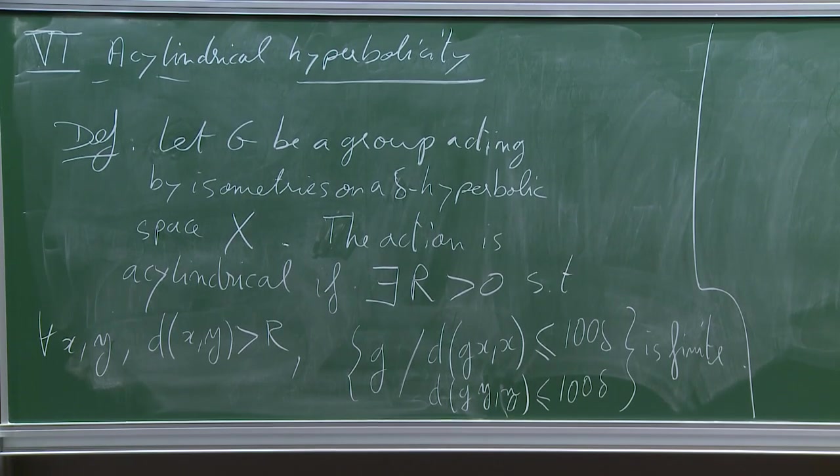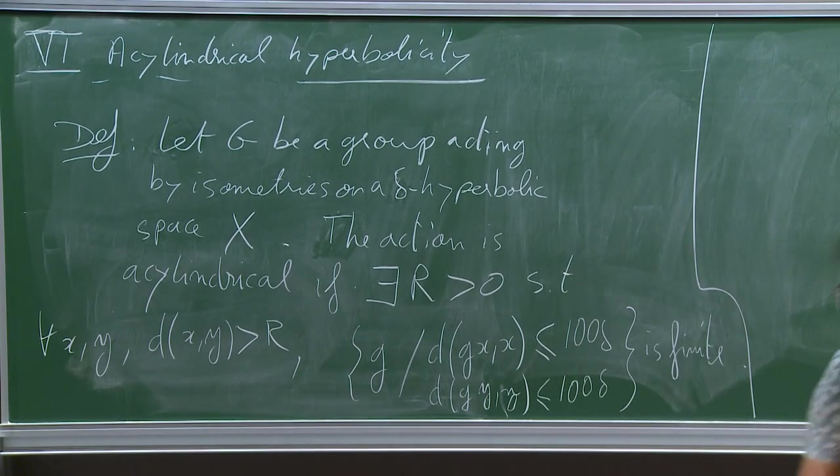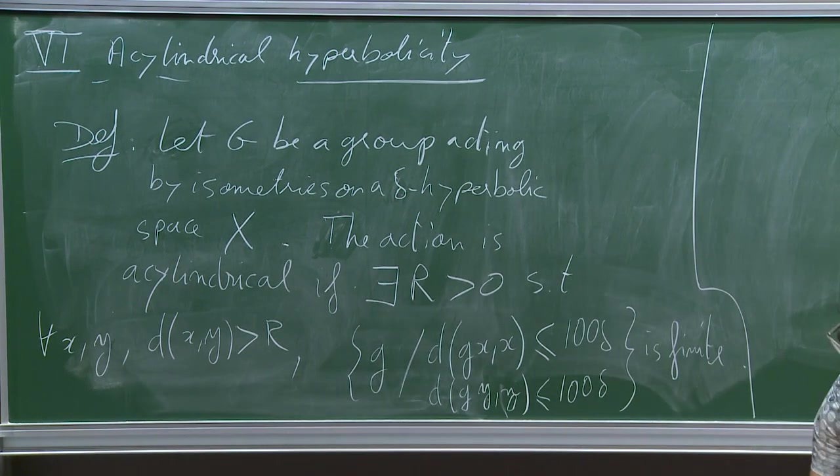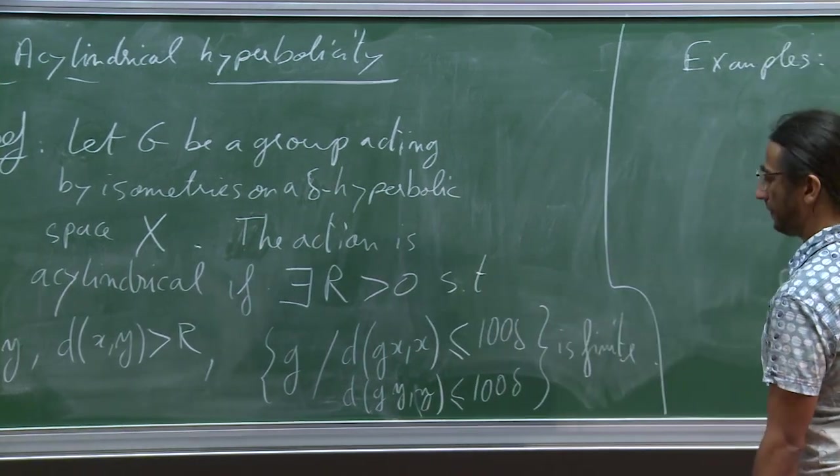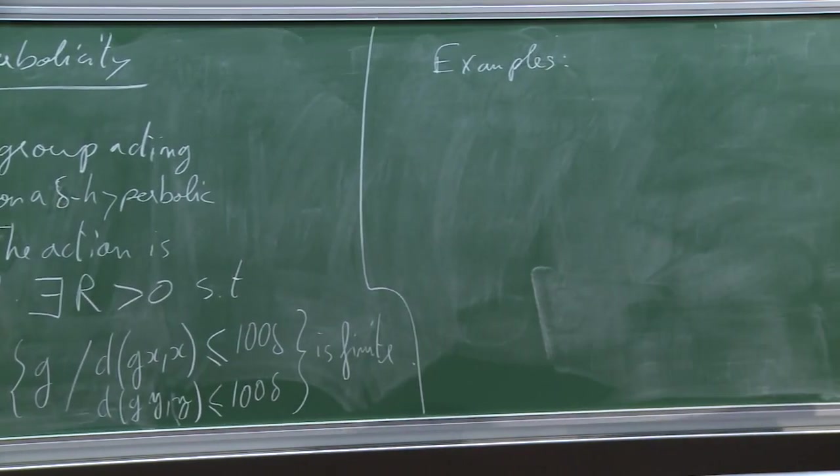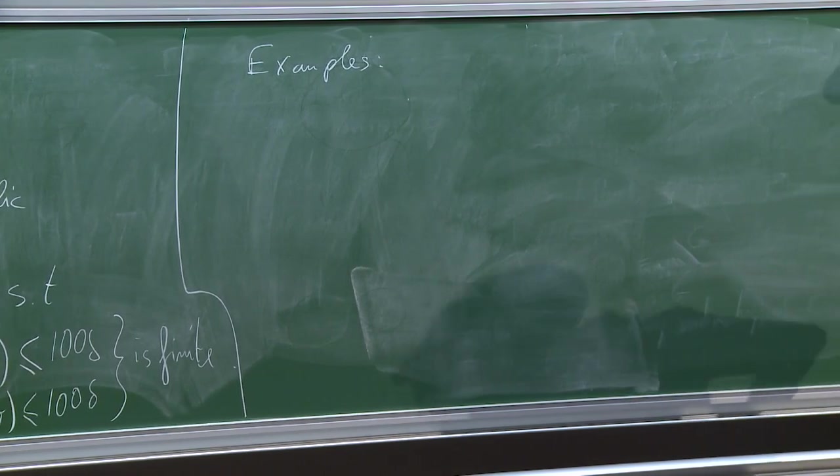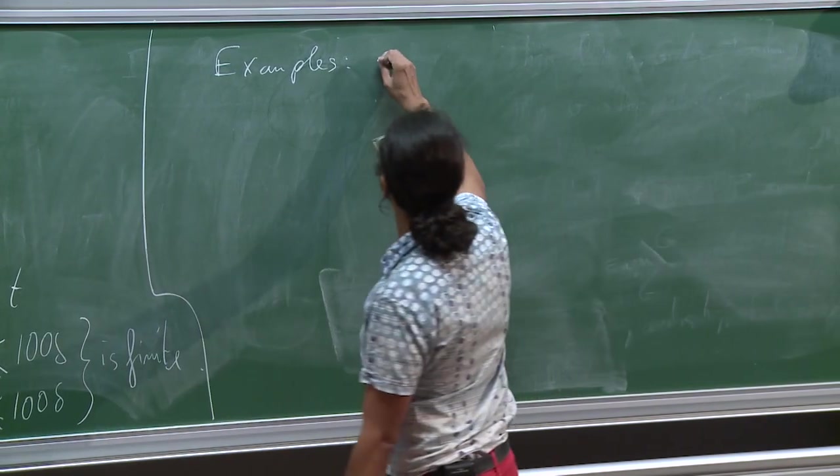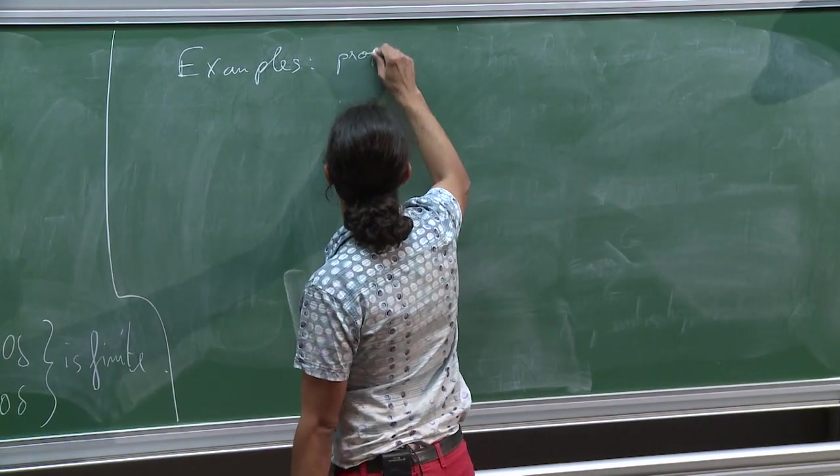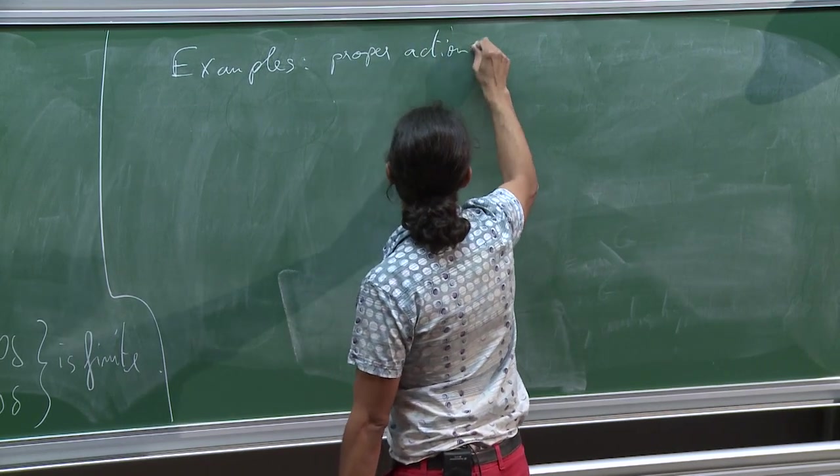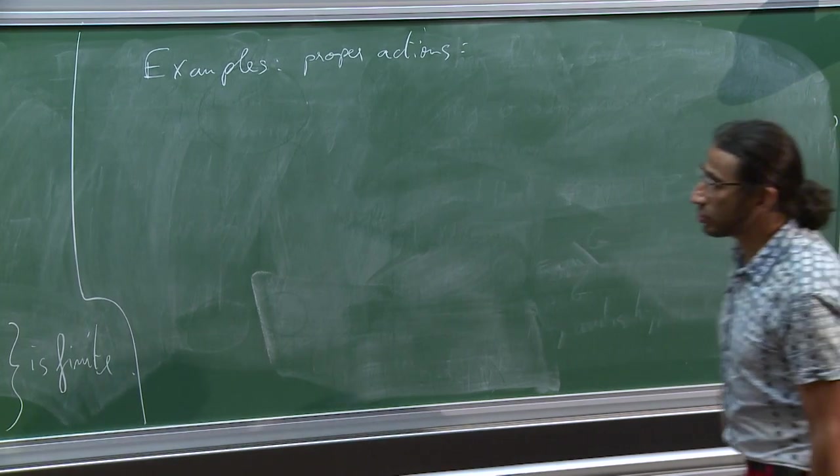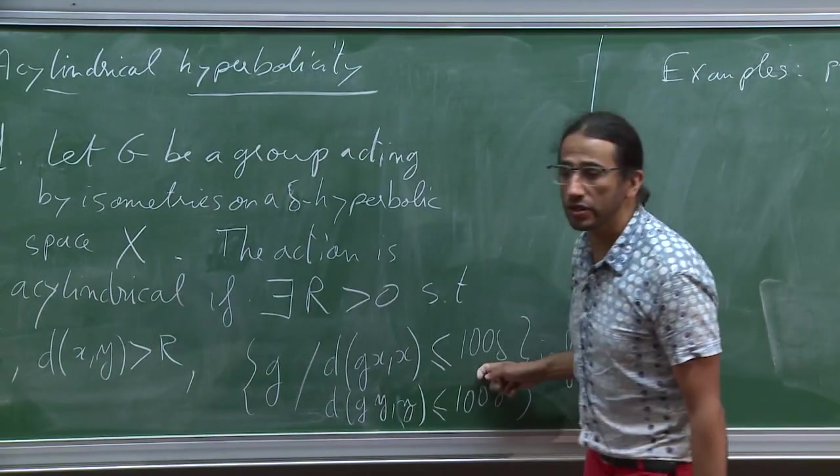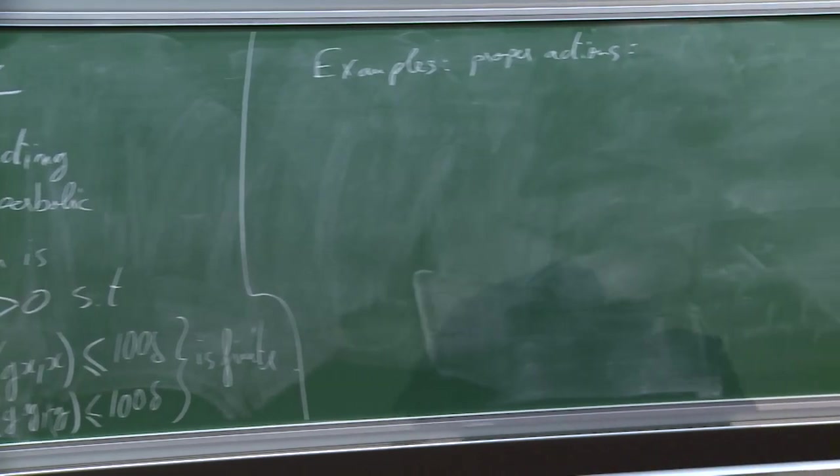We say that the action is acylindrical if there exists r positive such that for all x and y at distance r, the set of elements that move both of them by small quantities, say 100 delta, is finite. A strange definition, but a definition. Examples: properly discontinuous actions, proper actions.